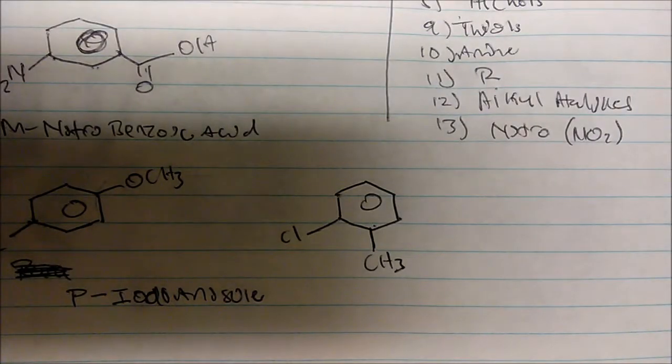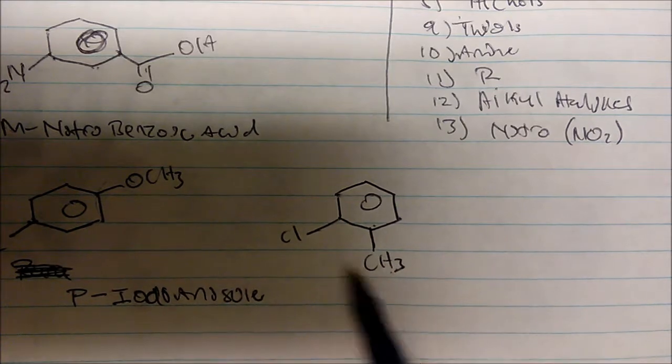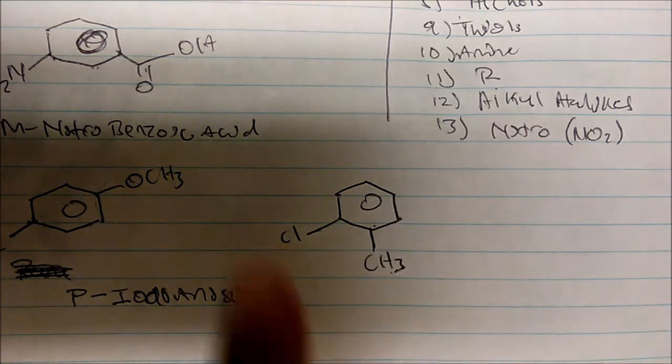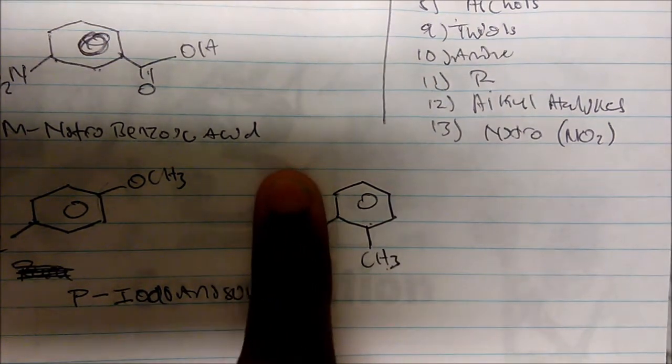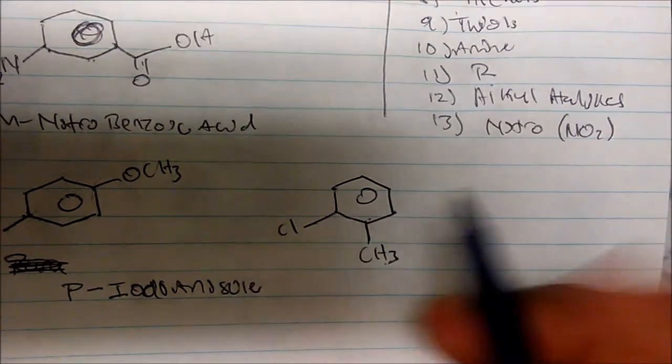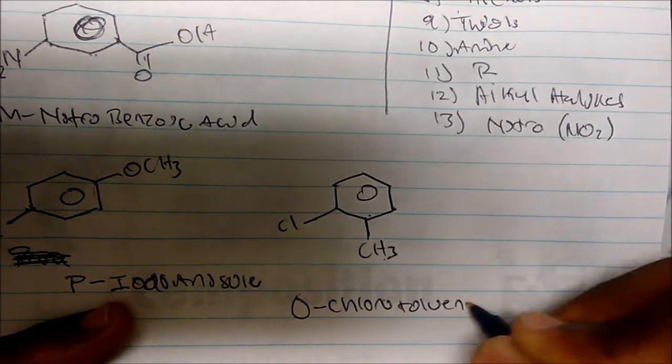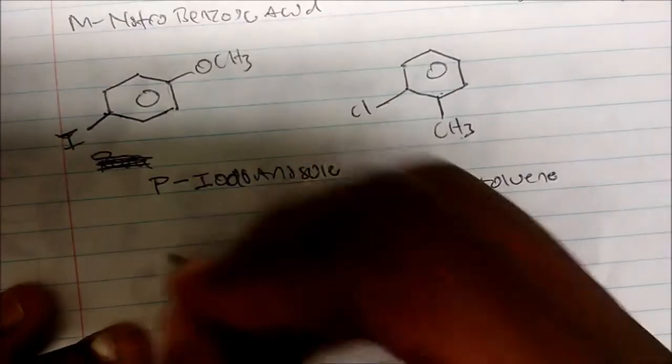Next: we have a methyl R group and a chlorine on the ring. R groups beat alkyl halides in priority. Without the chlorine, the parent name is toluene. The compound is 1,2-substituted, so this is o-chlorotoluene.